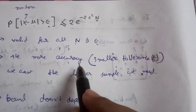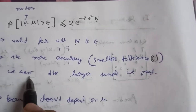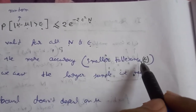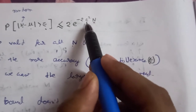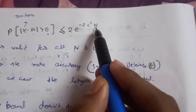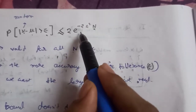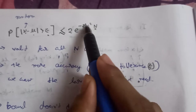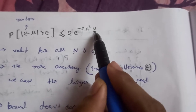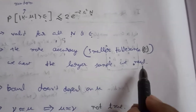Some notes from Hoeffding's inequality: The more accuracy we want — that is, the smaller the tolerance, the smaller the epsilon — the larger the sample size we need. Because if epsilon is very small, then epsilon squared will be even smaller, and we need a very large value of capital N to cancel this small epsilon squared so that the whole exponent remains large enough to keep the probability small.